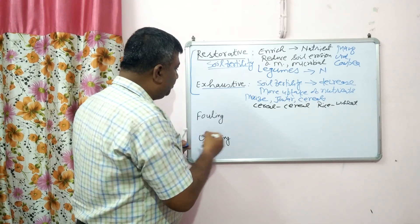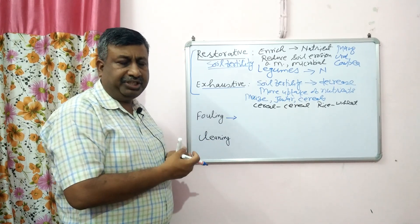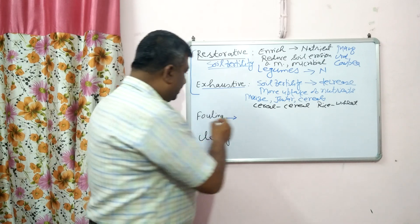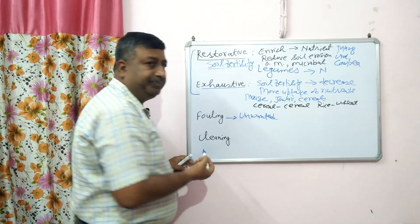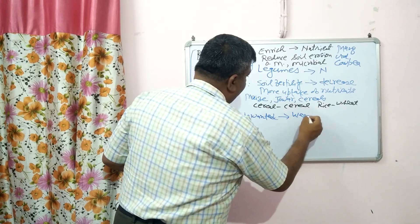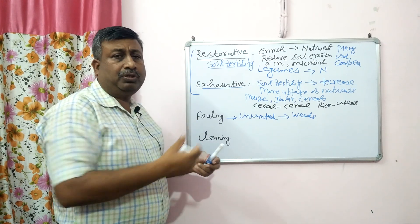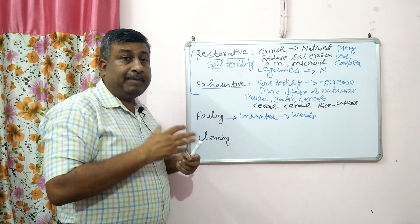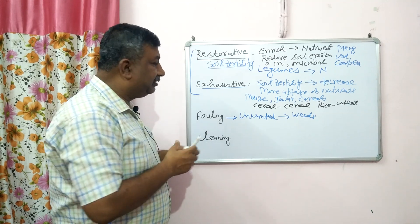Then fallow crops. Fallow crops are those whose cultivation practices leave high weed infestation or any unwanted thing — 'foul' means unwanted. If we grow such crops, cultural practices create unwanted conditions, the major being weeds. When we grow such crops there is more infestation of weeds. In general when we grow a crop we use hand weeding, hoeing, inter-cultivation, herbicides to control weeds, but in fallow crops the weed problem is much more — weed infestation is very high.